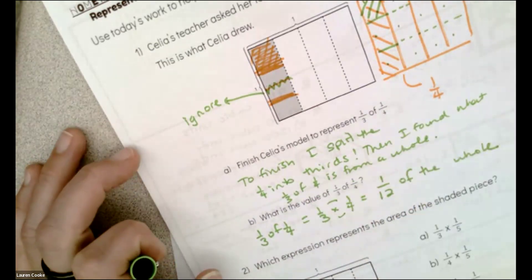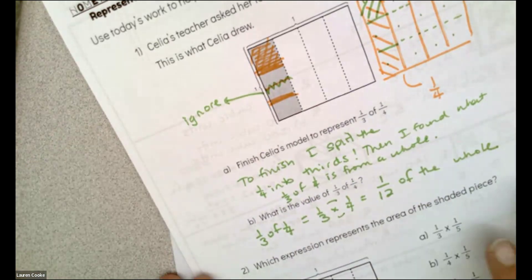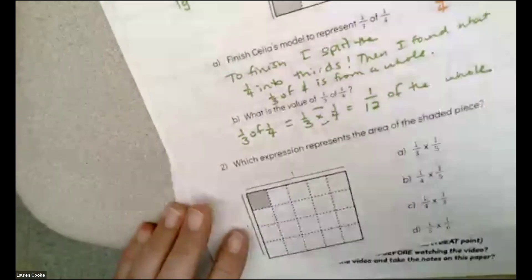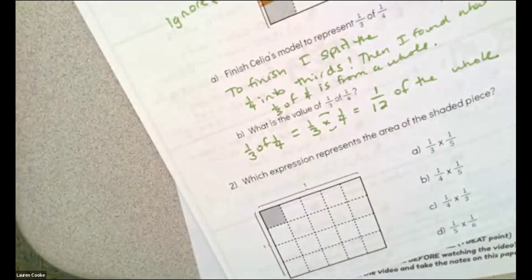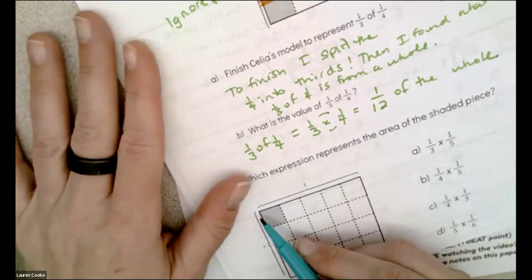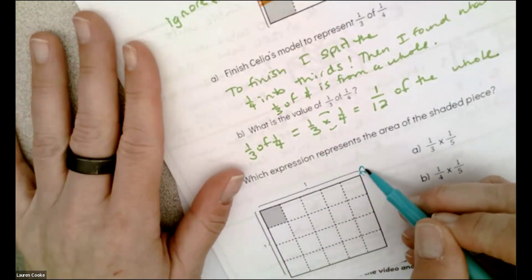And it ends up being a twelfth, so that's pretty great. All right, let's look at the next problem. It says which expressions, there's no equal sign here, represents the area of the shaded piece. Let's count. This entire thing is one, which means these are fractions.